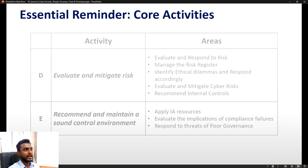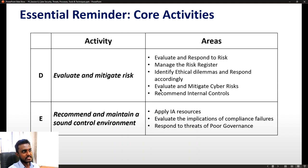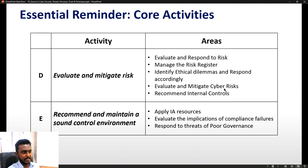A quick reminder on the co-activities as well. Co-activity D is evaluate and mitigate risk, and co-activity E is recommending and maintaining a sound control environment. Pay close attention in the areas column — you will notice 'evaluate and mitigate cyber risk,' and that is the section covered through this segment.